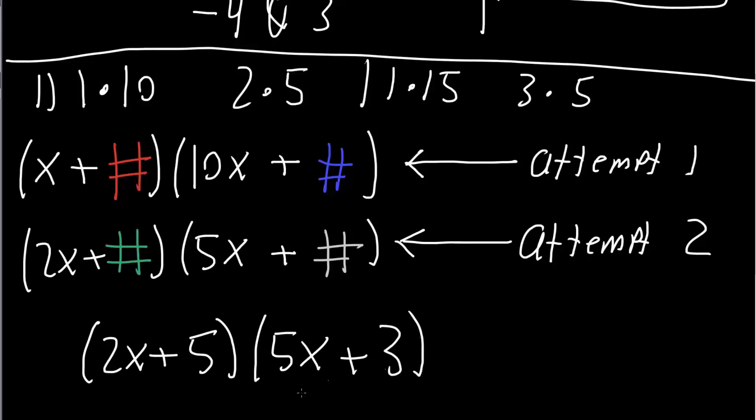And so we can quickly check. 2x times 3 is 6x. 5x times 5 is 25x. 25x plus 6x is 31x. 5 times 3 is 15. And 2x times 5x is 10x squared. And so this would be the answer to that problem. And that's about it.